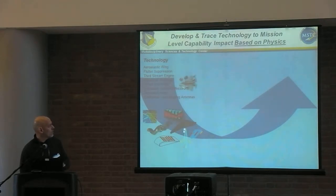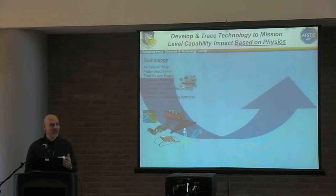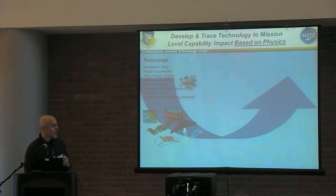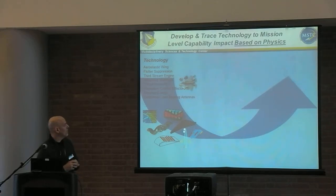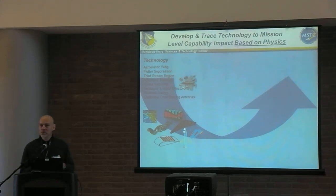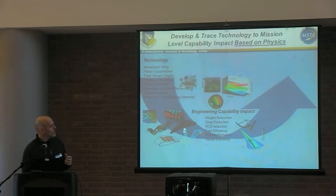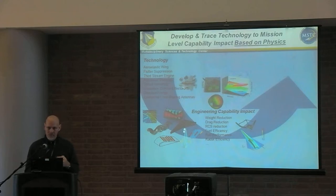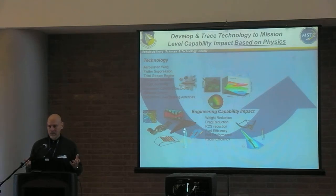Starting on the far left, we're actually pretty good at developing technologies. We've got a lot of smart people that think of wonderful ideas — different types of multidisciplinary technologies like active aeroelastic wing, flutter suppression, advanced materials. The next level is that, if we're using physics-based analysis and design, we can determine the engineering impact — meaning the impact a material has on the weight of the structure, or what impact an aero technology has on drag reduction. So we can quantify computationally the impact on engineering capabilities.